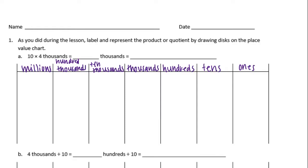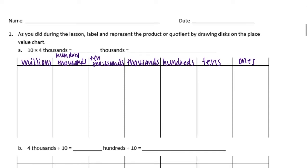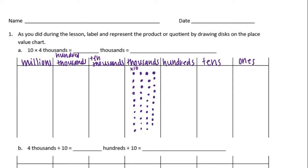So what we have is ten times four thousands. Let's start with four thousands. We have four thousands, and we're going to multiply those by ten. If I multiply that by ten, I'm going to have forty of these. Each group of ten thousands is equal to ten thousand, which makes sense — ten groups of a thousand is ten thousand.